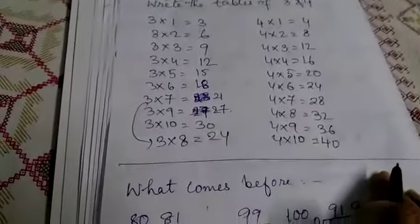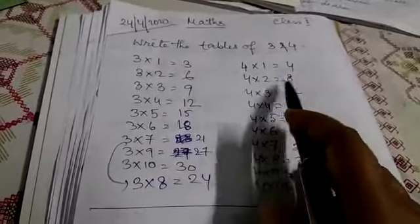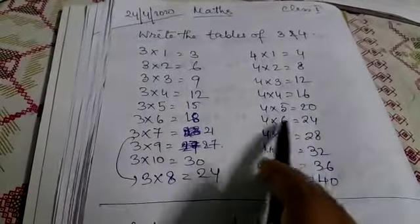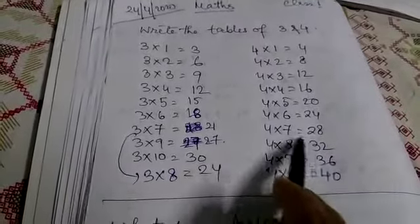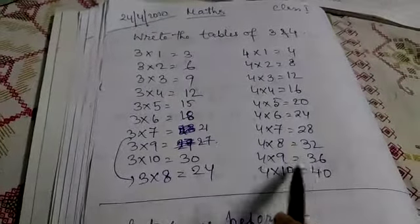3×9=27, 3×10=30. Now the table of 4: 4×1=4, 4×2=8, 4×3=12, 4×4=16, 4×5=20, 4×6=24, 4×7=28, 4×8=32, 4×9=36, 4×10=40.